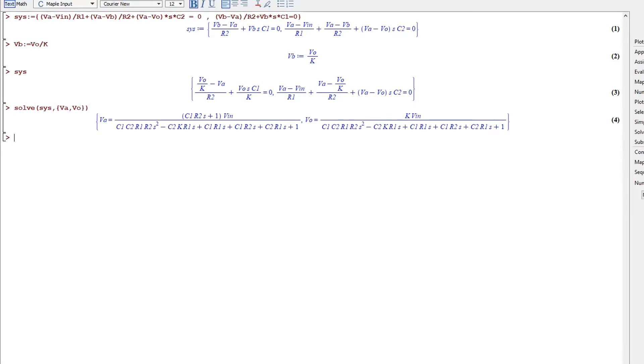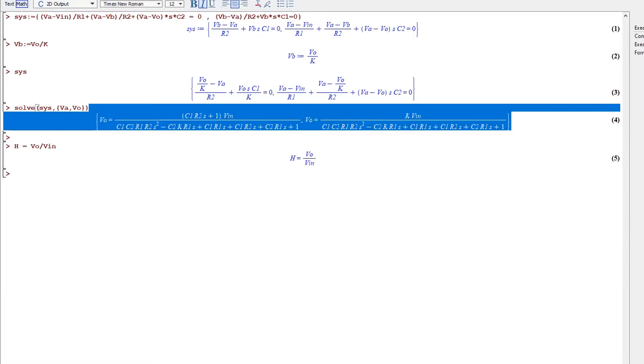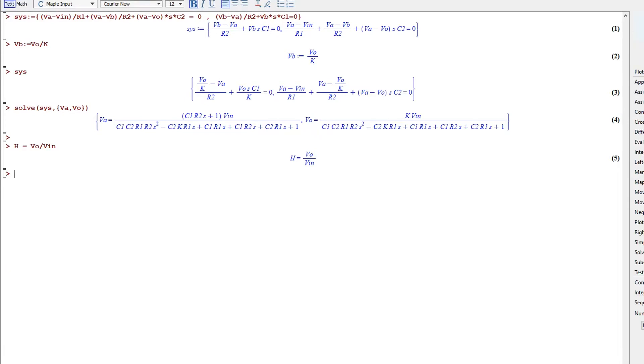And this is the result we need, vo equals this term. Now remember that the transfer function h is defined as vo divided by vin. And if we divide with vin on both sides of this equation, we end up with vo divided by vin equals this term with vin divided away. Like so. And now this is the transfer function for our second order Sallen-Key low pass filter.